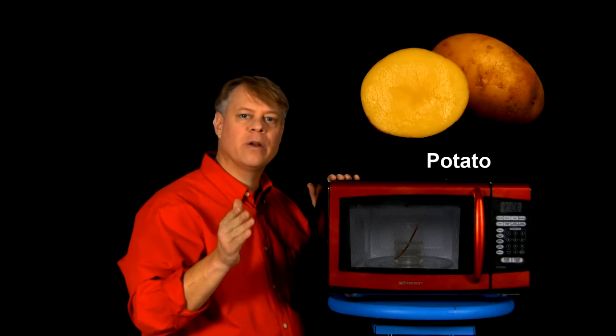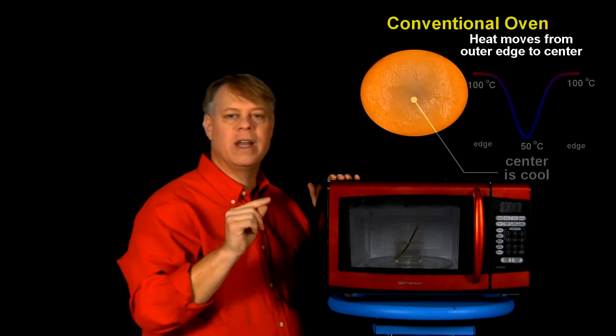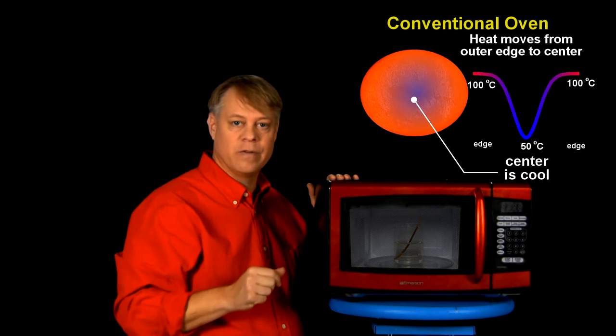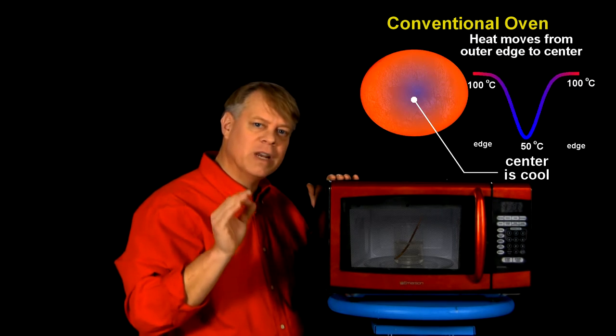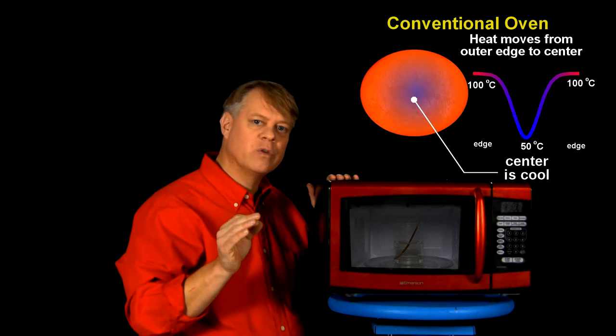In a traditional oven or stove, we heat food by placing a pan on a burner or in the oven where the walls radiate heat, which cooks the outside of the food. The insides cook when heat transfers from the surface of the food to its interior.